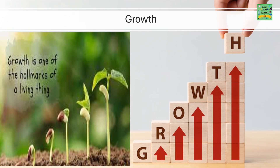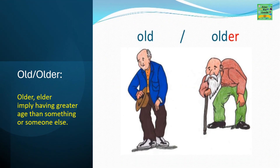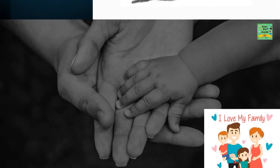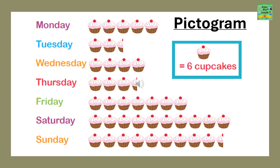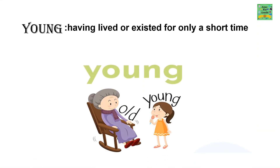Growth is one of the hallmarks of a living thing. Old, older, eldest, elder — these imply having greater age than something or someone else. Parent. Young: having lived or existed for only a short time.